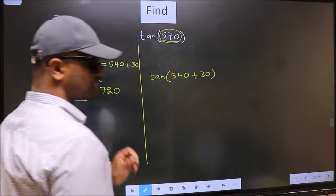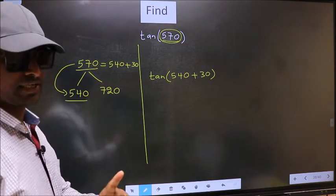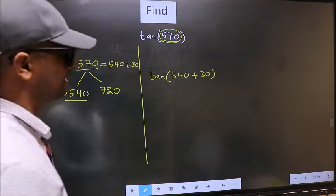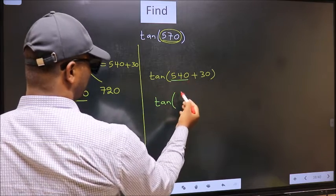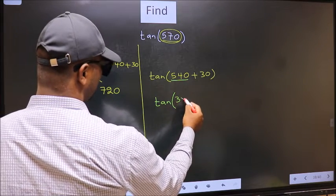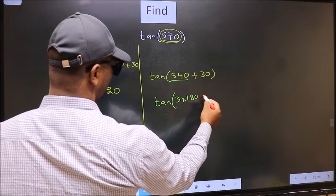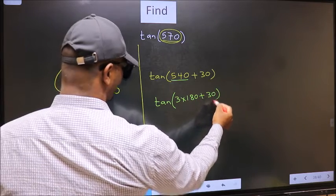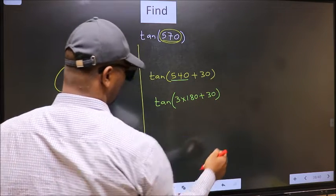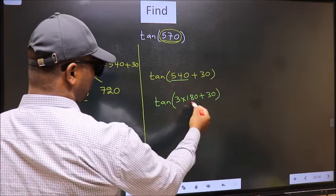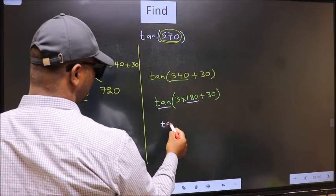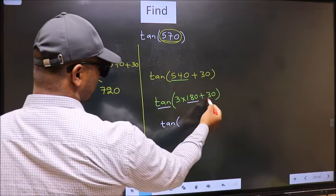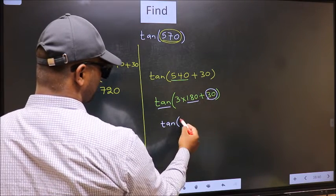This is your step 1. Next, tan, in place of 540 now we should write 3×180 plus 30. Next, here we have 180, so tan is not going to change. It will remain tan and inside we get this angle 30.